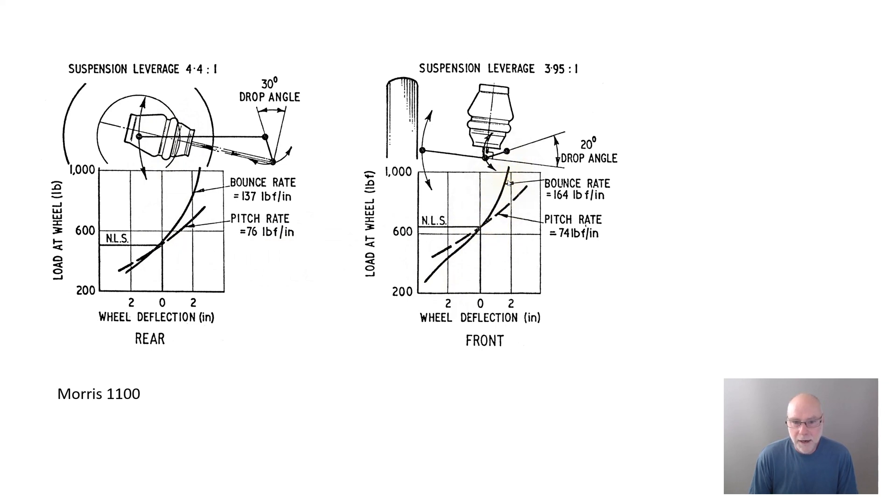Here is the front deflection. You can see there's a slightly different curve. Look how it rises in rate as you get towards full bump. Bounce rate of 164 pounds per inch. Pitch rate, again, very low, only 74 pounds per inch. And there's your motion ratio, 4.4 to 1, very high. Part of taking into account that the rubber spring didn't have a lot of deflection. It's only going to deflect a small amount, so we need to increase that dramatically for wheel movement.